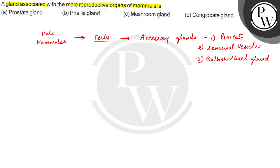Here we are talking about these three accessory glands which are present in male mammals. Their function is to secrete fluids, and these fluids are transferred into the urethra.